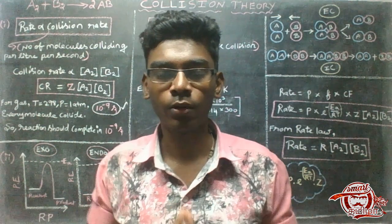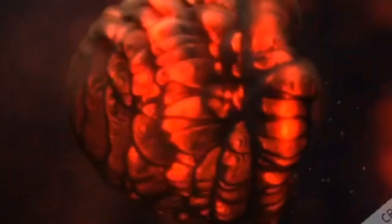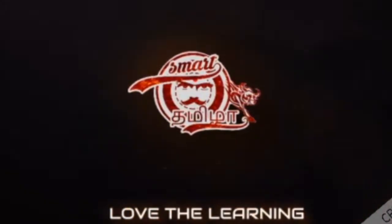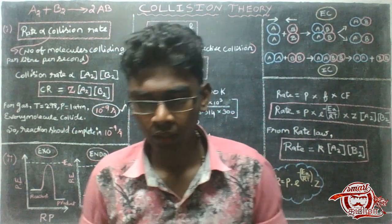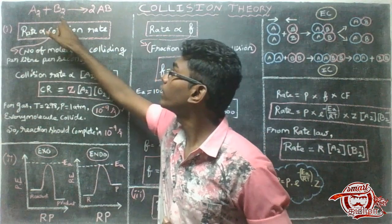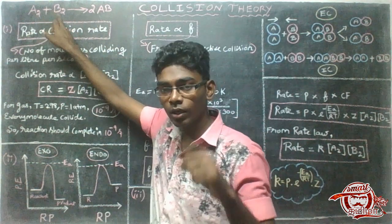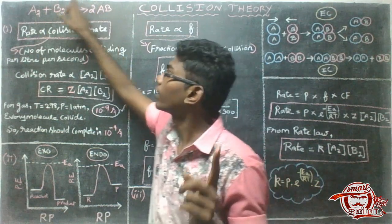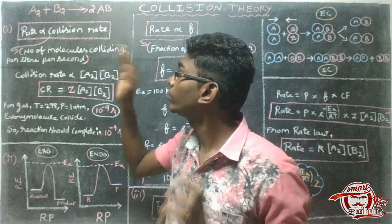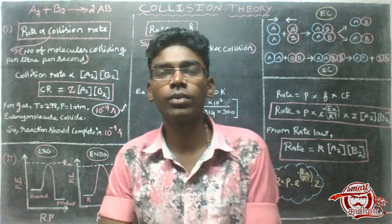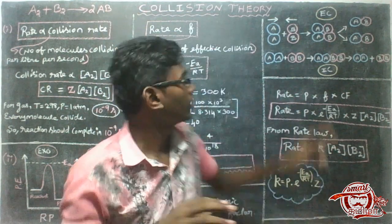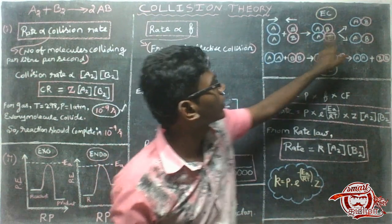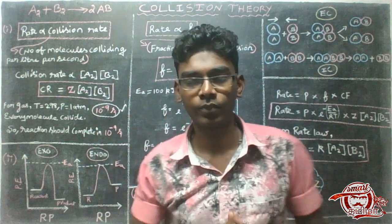If you want to talk about this one, let's talk about Collision Theory. Collision Theory is the first thing to learn. A2 plus B2 gives AB. So Collision Theory: A1 plus B2 gives AB2. That's it.